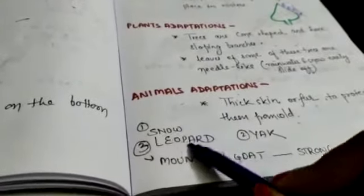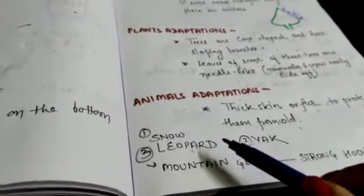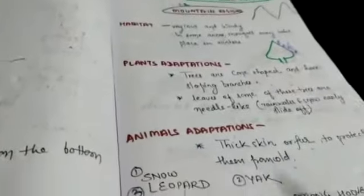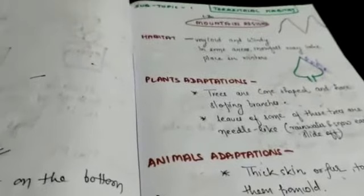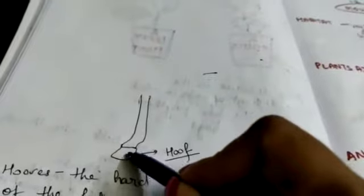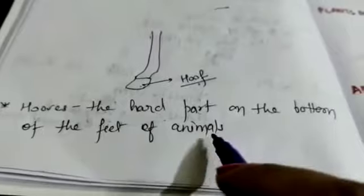About animal adaptation, animals have thick skin or fur to protect them from cold. Now about snow leopard, yak, and mountain goat. These three are examples of animals that are present in mountain region. They have strong hooves. What do you mean by strong hoof? In case of horse or mountain goat, these hard structures are known as hoofs. The hard part of the bottom of the feet of animals.